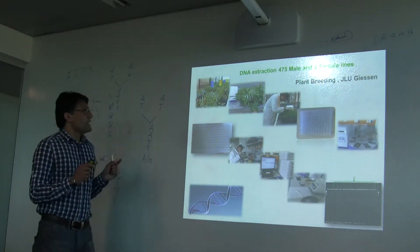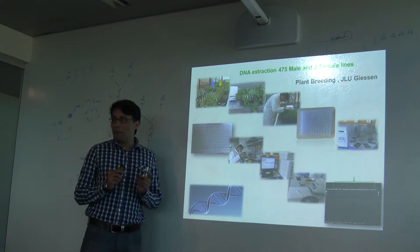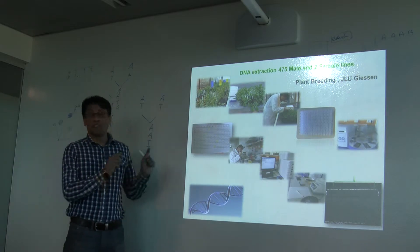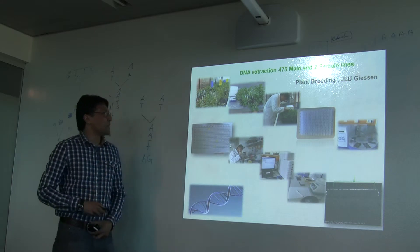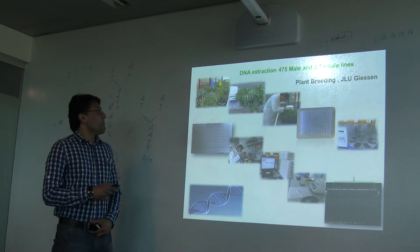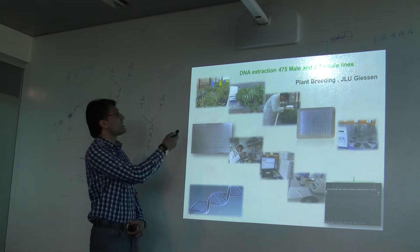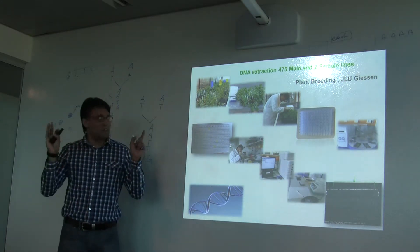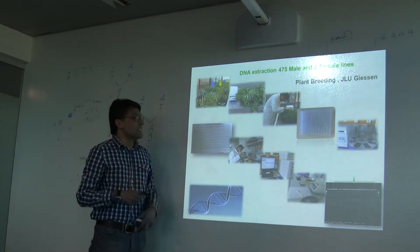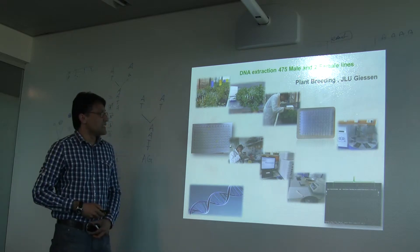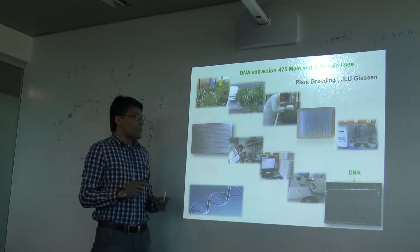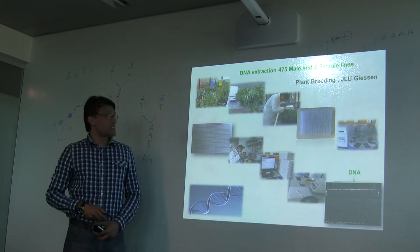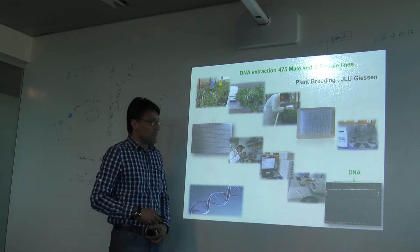These are some glimpses of my lab work over the last three months — just some, but there are a lot more. As you can see, I started from simple plants, then collected the leaves and went through different processes. At the end we got the DNA, and as you can see, this is a nice label here.